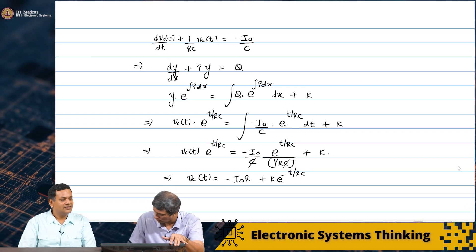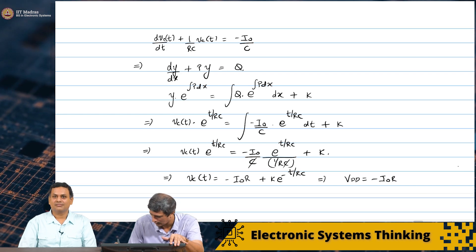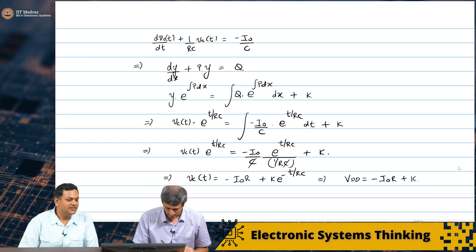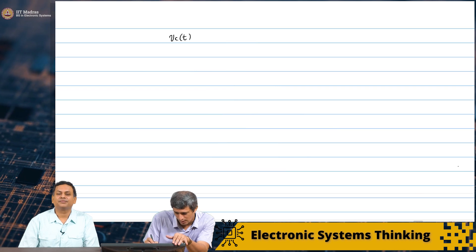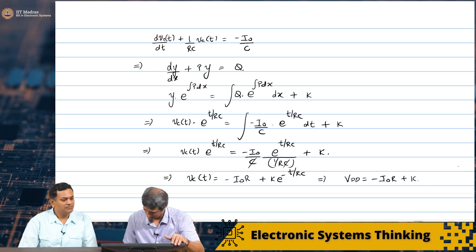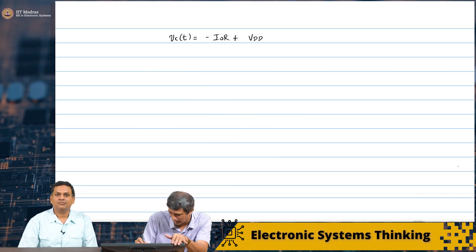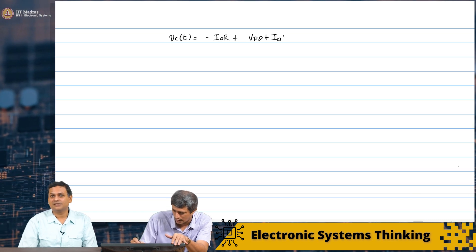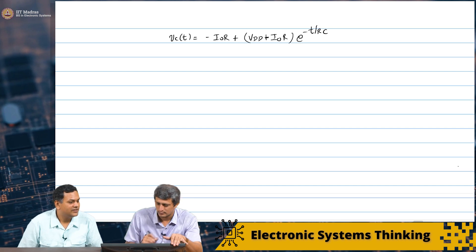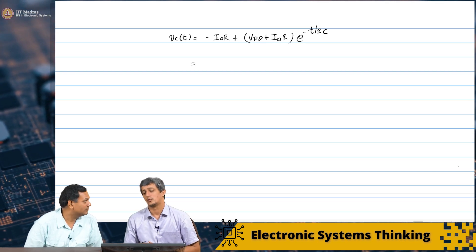At t=0, Vc should be Vdd, so Vdd = minus I₀R plus K, which gives K = Vdd plus I₀R. Therefore Vc(t) = minus I₀R + (Vdd + I₀R)·e^(minus t/RC). We can verify: at t=0 it gives Vdd; at t→∞ it gives minus I₀R.